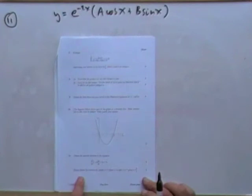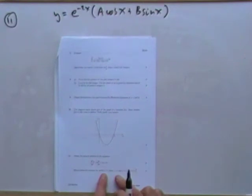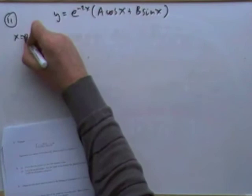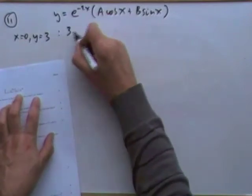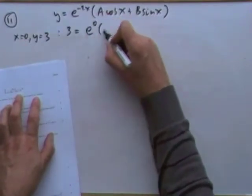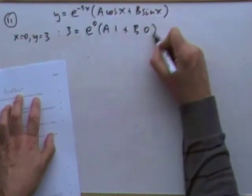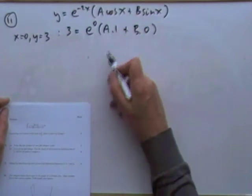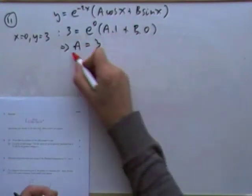For the particular solution, use the given conditions. When x = 0, y = 3: substituting gives 3 = e⁰(A·cos 0 + B·sin 0) = A·1 + B·0 = A. So A = 3. The equation now reads y = e^(-2x)(3 cos x + B sin x).